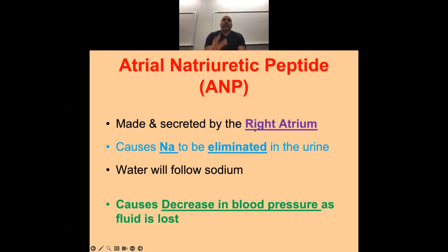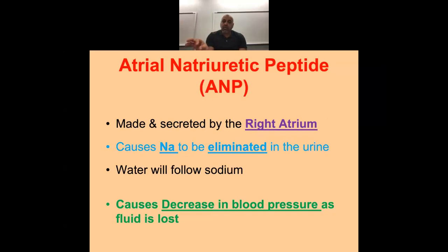ANP — atrial natriuretic peptide — comes from the right atrium of the heart. If there's too much blood exerting force on the right atria, we release ANP, which makes us secrete sodium. When solute leaves the nephron, water follows due to osmotic pressure. That's why drinking salt water is incredibly dangerous — that excess sodium causes your body to secrete it, pulling water out with it and dehydrating you faster.